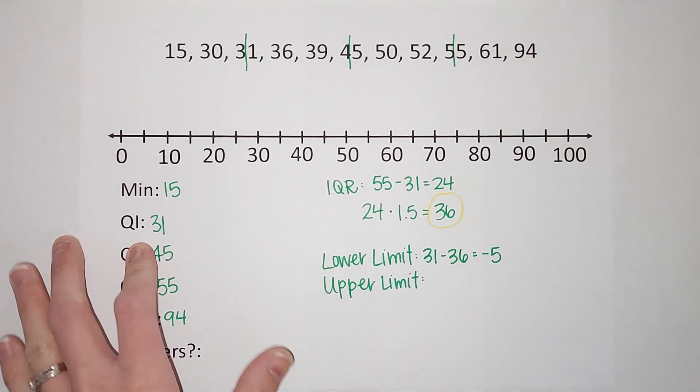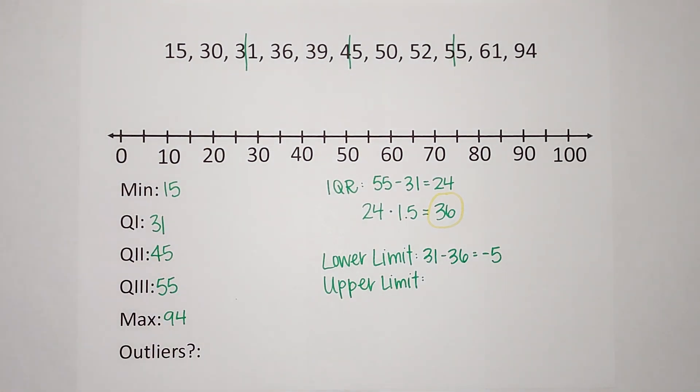And then for my upper limit, you might have guessed it, I'm going to take quartile 3 and add the IQR times 1.5.